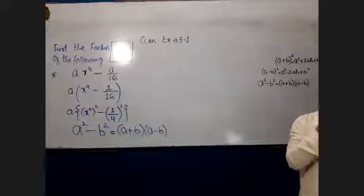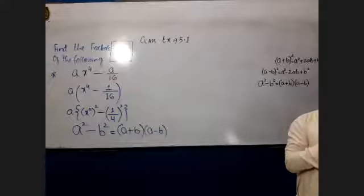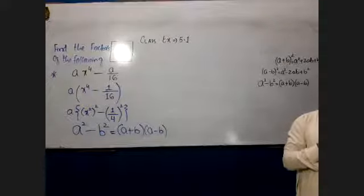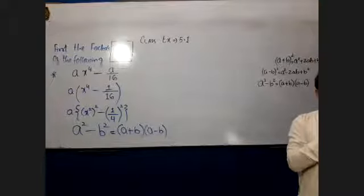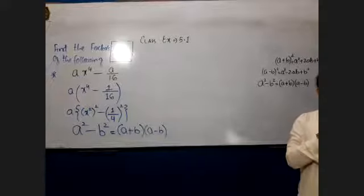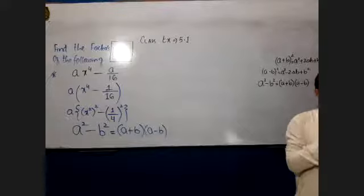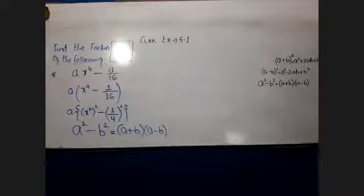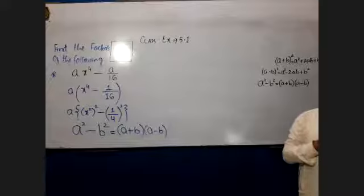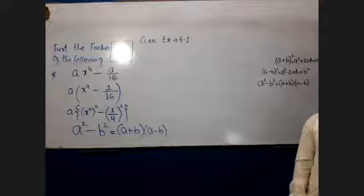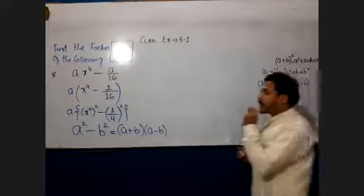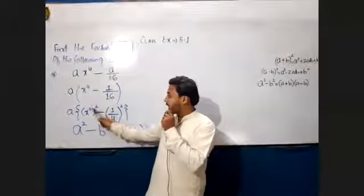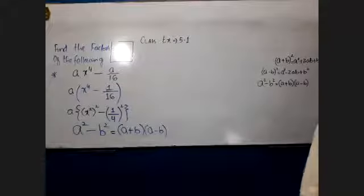We will put left-hand side to right-hand side. x to the power 2 is written because here is 4 and we have to remove the square from the left. So when we remove the square from power 4, we get power 2. The advantage of removing the square from power 4 is that the remaining power becomes 2.